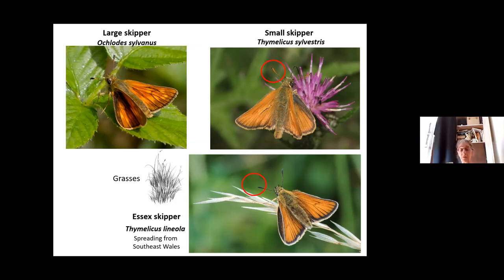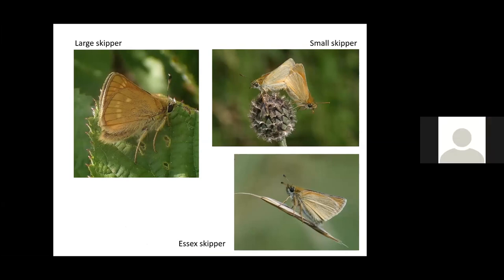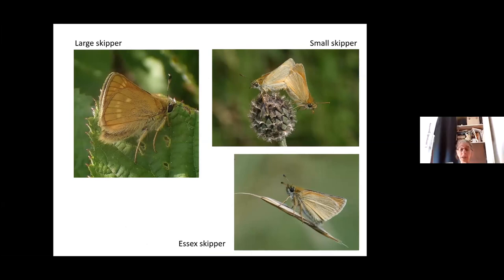Close-focusing binoculars are very useful for skippers, as is taking photographs to check later. The large skipper underside has markings almost like stained glass windows. Small and Essex skippers are very plain underneath. Even in photos you can see the difference in antenna colour. The large skipper will have more markings on its underside.